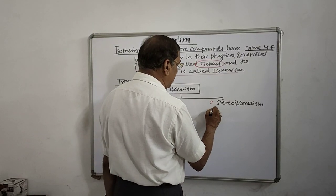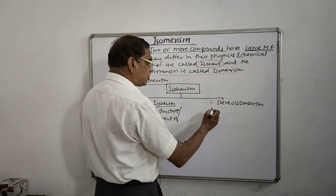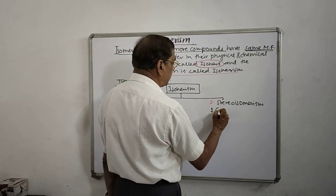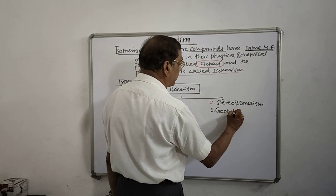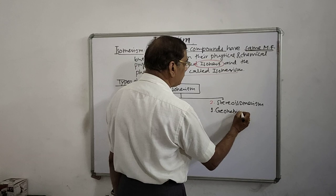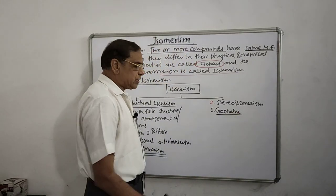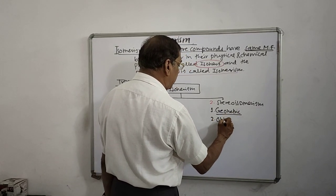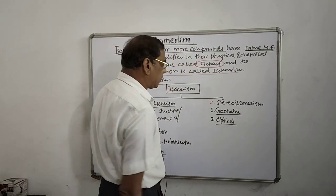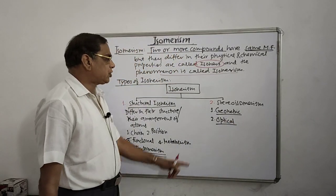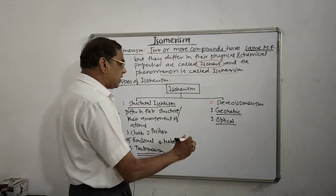Stereo isomerism is again of two types: one is called geometric isomerism and the second one is called optical isomerism.